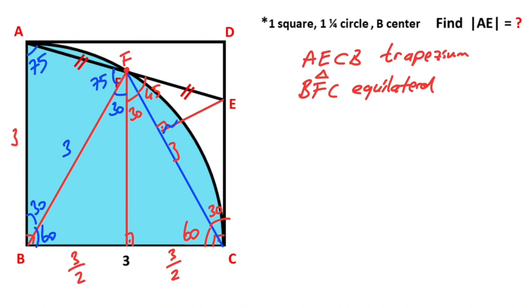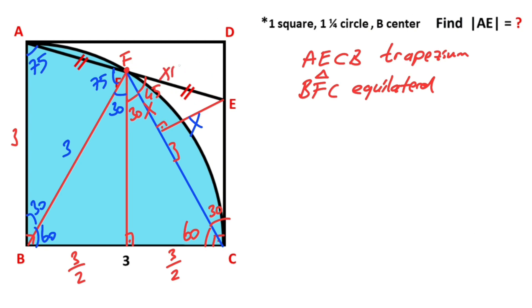Let's call this length x, so this length is also x units. If there is an x unit opposite the side of 45 degrees, then the side opposite 90 degrees must equal x times root 2. So this part is also x root 2.